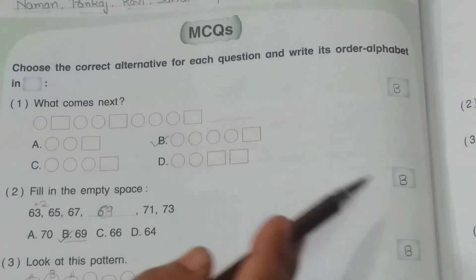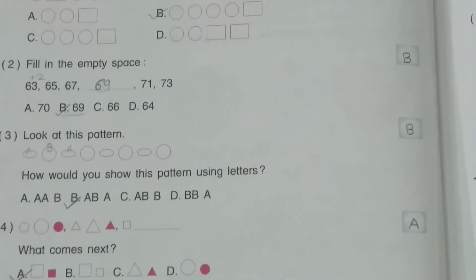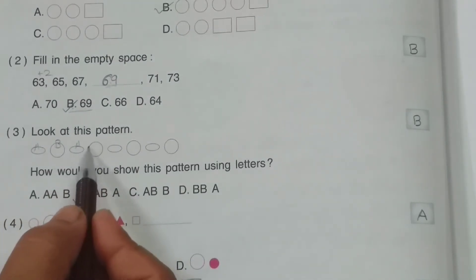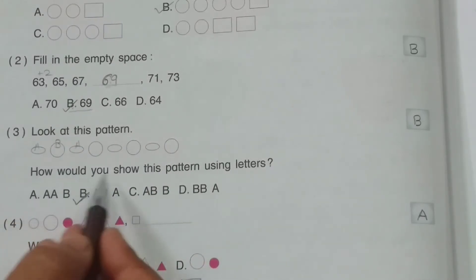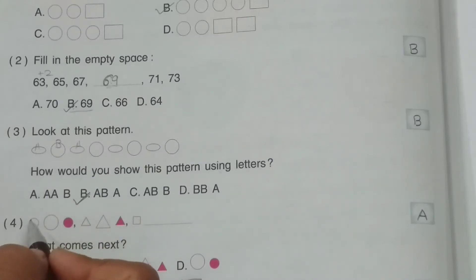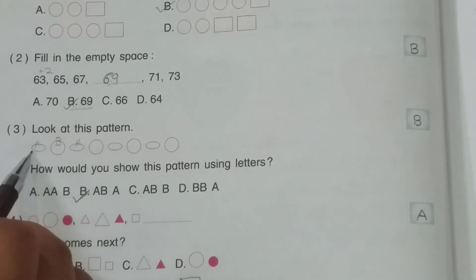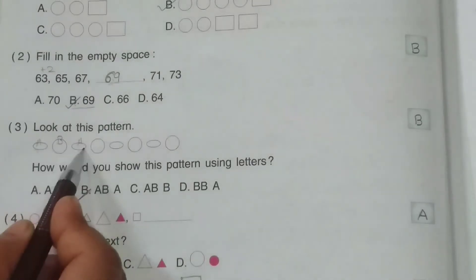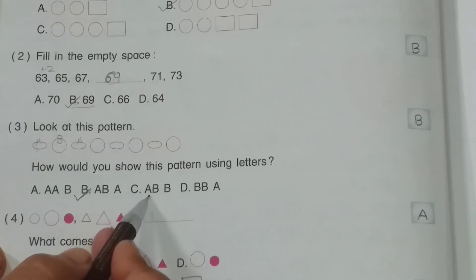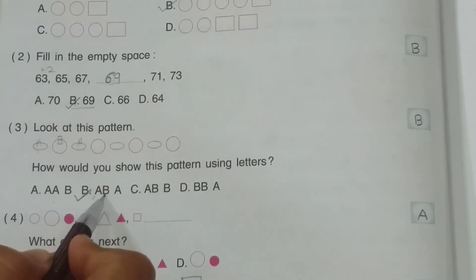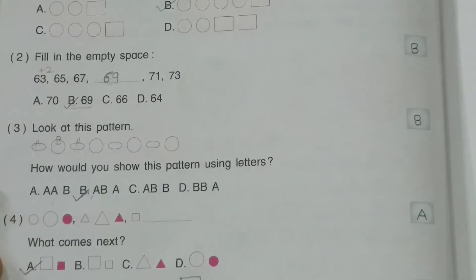Now see the third one: look at this pattern — owl shape, circle, owl shape, circle, owl shape, circle. How would you show this pattern using letters? Use A for owl shape and B for circle. So the pattern is A, B, A, B, A, B — that is A B A. So option B is your right answer — write B in the box.